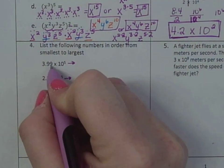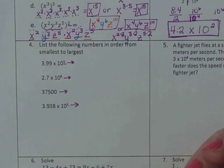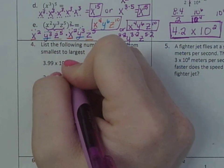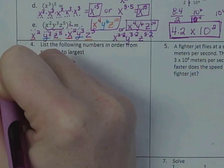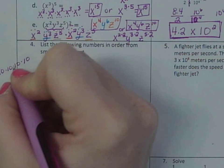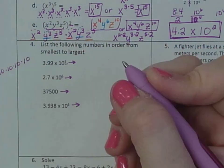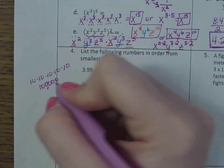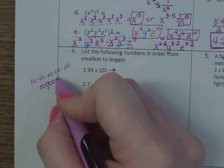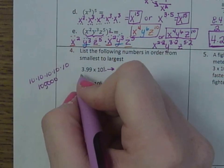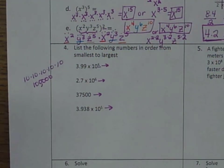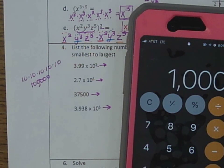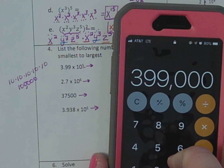So if I have 3.99 times 10 to the 5th, remember this is a positive exponent, meaning that I would do 3.99 times 10 to the 5th, which 10 to the 5th would be 2, 3, 4, 5. So that would be 1, 2, 3, 4, 5. So it would be 3.99 times 100,000, and it would give you 399,000.